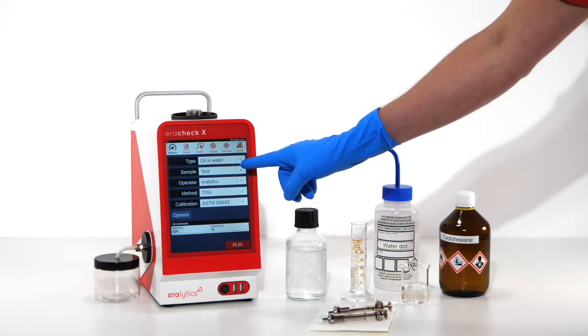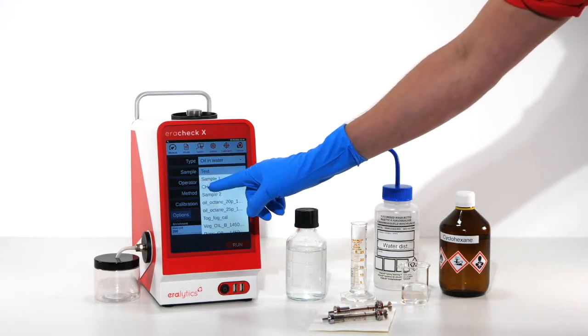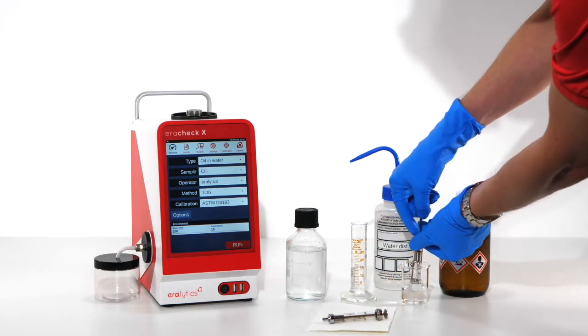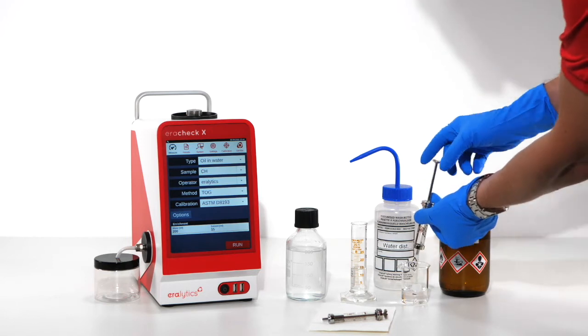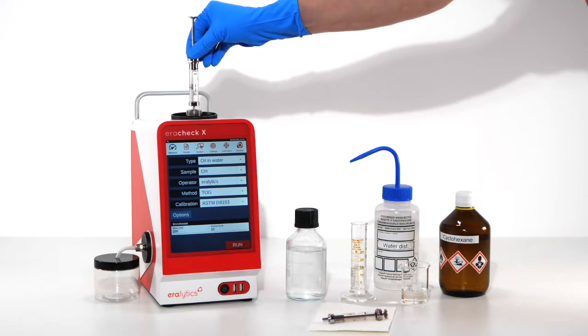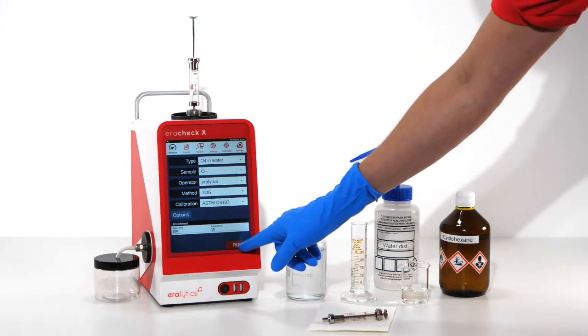Enter CH for cyclohexane as sample ID and fill the provided syringe with fresh solvent. Attach it to the inlet assembly at the top and start the measurement by pressing the run button.